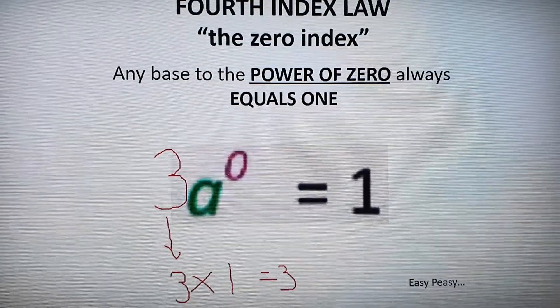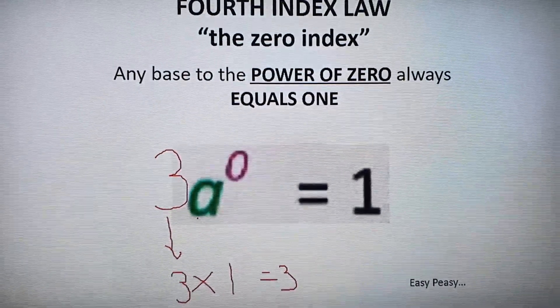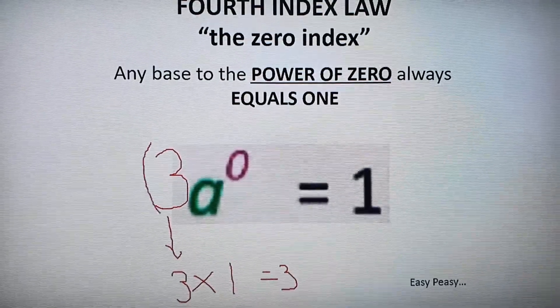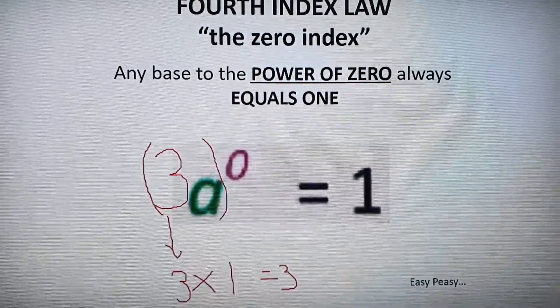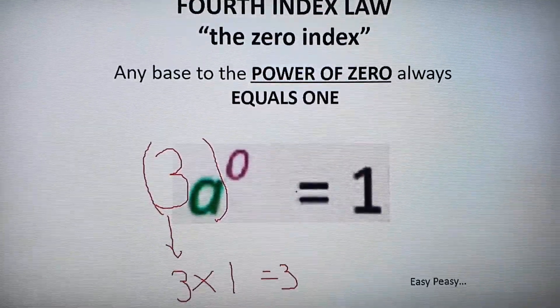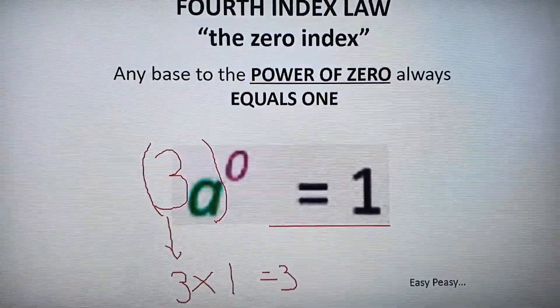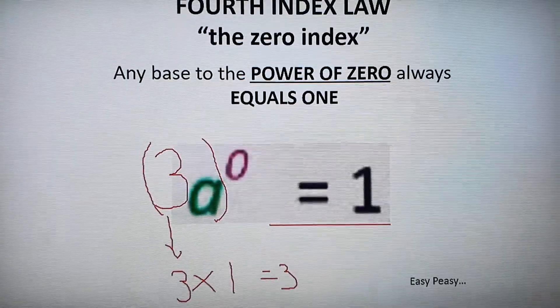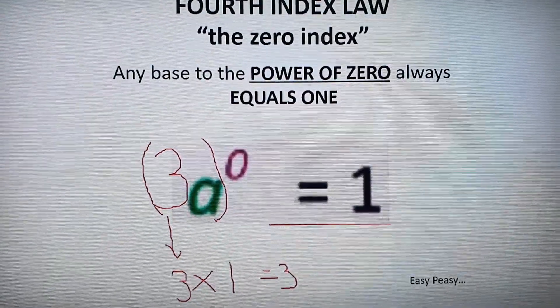So be very careful. The power of zero only applies to what it's with. Now, if I want to make this whole thing equal to one, what I can do is I can make 3a all raised to the power of zero. Now that will definitely be one. So let's go through some examples that talks about the third and fourth index laws.